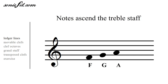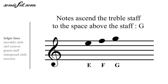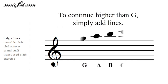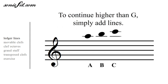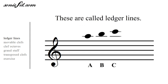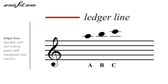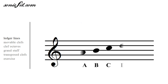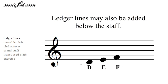Notes ascend the treble staff. When they get to the top, you can keep going by adding lines. These lines are called ledger lines. You can add ledger lines both above and below the staff.